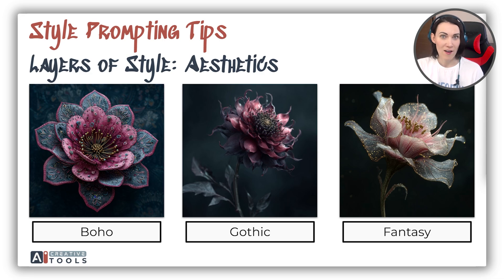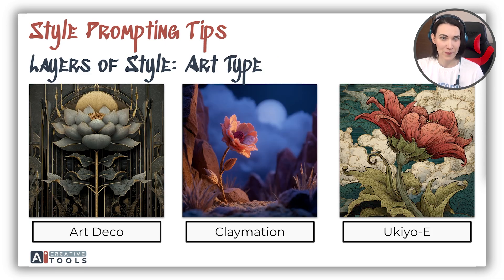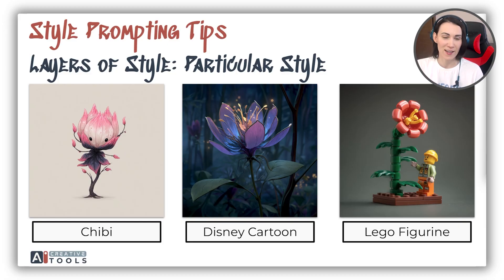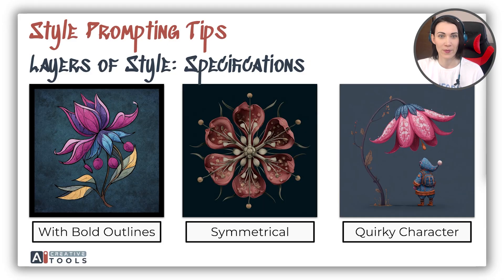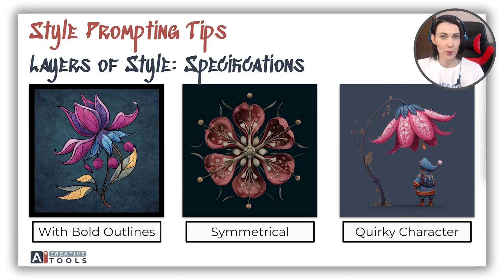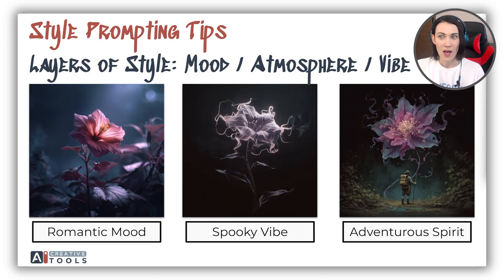By aesthetics: boho, gothic, fantasy. By art type: art deco, claymation, yuki, and others. Particular style: chibi, Disney cartoon, lego figurine. Specifications: with bold outlines, symmetrical, quirky character. And by mood, atmosphere, and vibe: romantic mood, spooky vibe, adventure spirit.